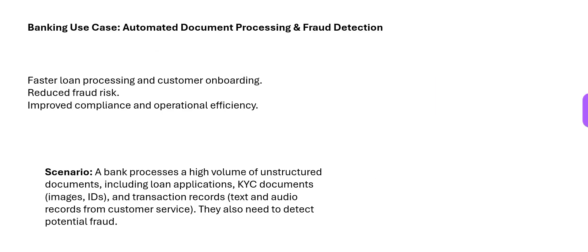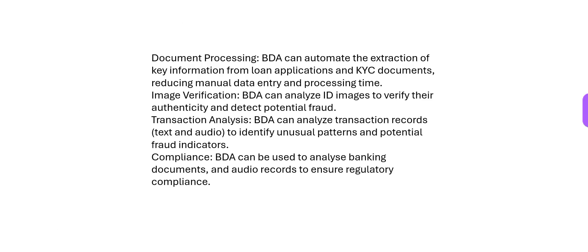Third use case: banks can use BDA for fraud detection. There are high volumes of unstructured documents — PDFs, Word files, KYC documents like Aadhaar cards, PAN details, and so on. These can be used to detect potential fraud. BDA can help with document processing: you do not have to do manual data entry; it will scan and automatically enter the data, reducing processing time significantly.